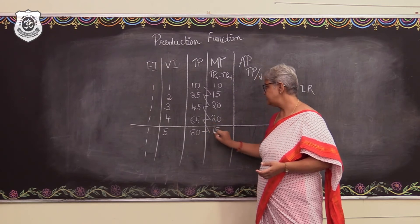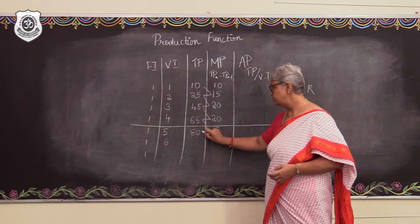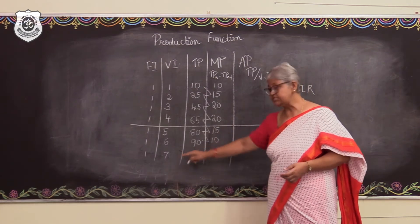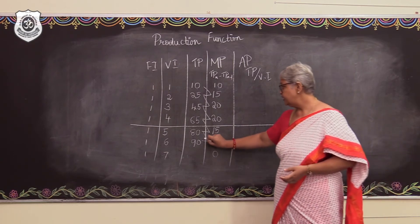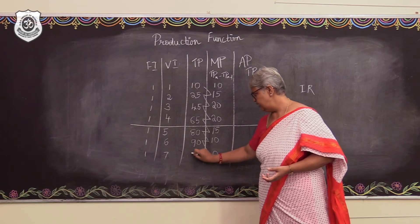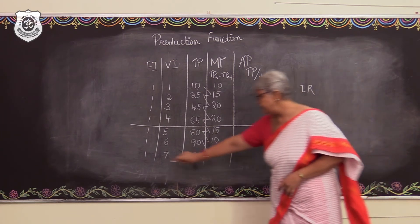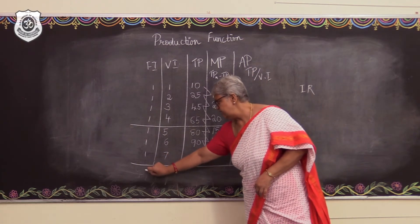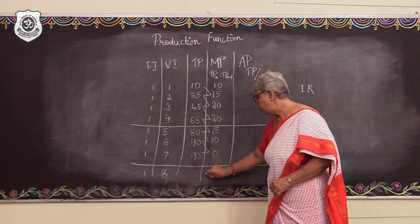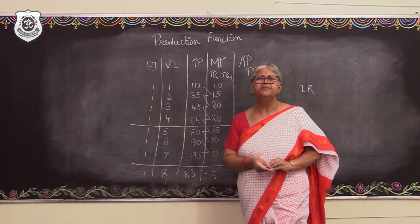So the total product becomes 65 plus 15, which is 80. Then the sixth person contributes 10 units of output, giving a total product of 90. The seventh person contributes 0, so the marginal product becomes 0 and the total product reaches its maximum at 90, marking the end of the second phase. If the entrepreneur employs an eighth unit, the marginal product becomes negative and the total product starts falling.